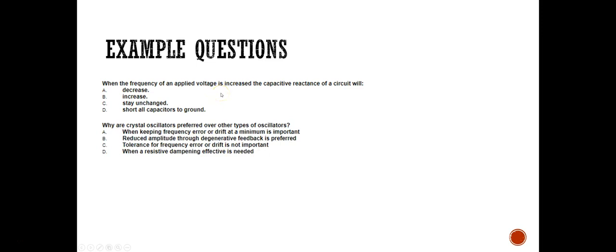Why are crystal oscillators preferred over other types of oscillators? Four options: when keeping frequency error or drift at a minimum is important, reduced amplitude through degenerative feedback is preferred, tolerance for frequency error or drift is not important, or when resistive damping effect is needed. The answer is the first: when keeping frequency error or drift at a minimum is important. That's why crystal oscillators are preferred and are used in communication.